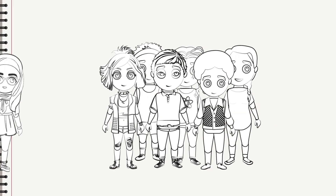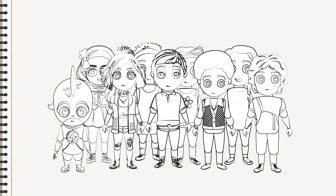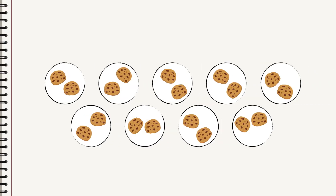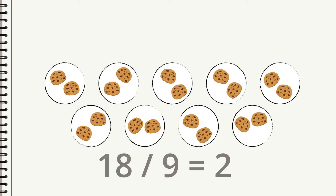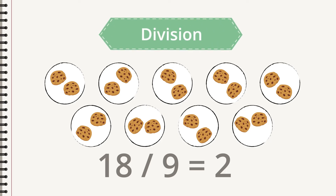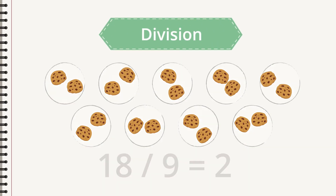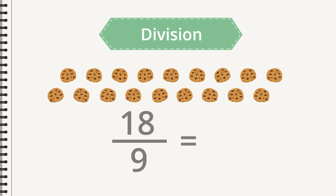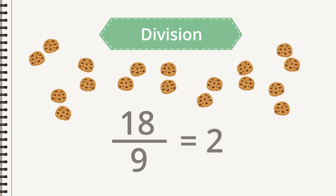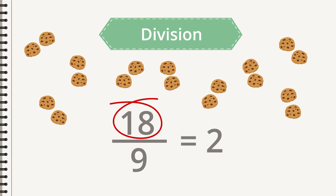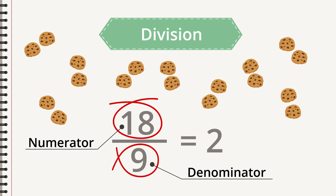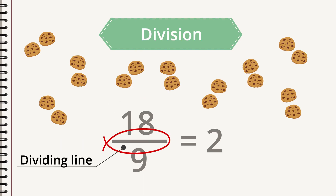More guests arrive at the party. Now there are nine, and they want to share the cookies equally. That makes two cookies on each plate, because eighteen divided by nine is two. This is division — divided by. When you want to split a number into equally sized parts, you divide. The number at the top is the numerator, the number at the bottom is the denominator, and between them is a dividing line. The result is a quotient.